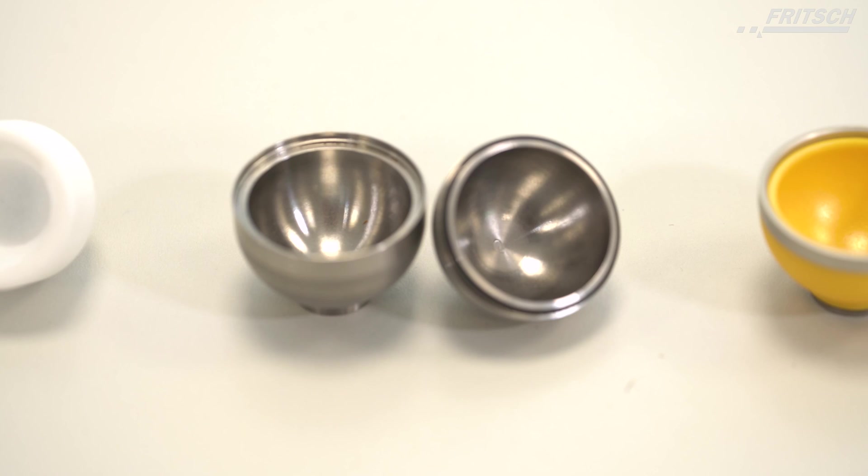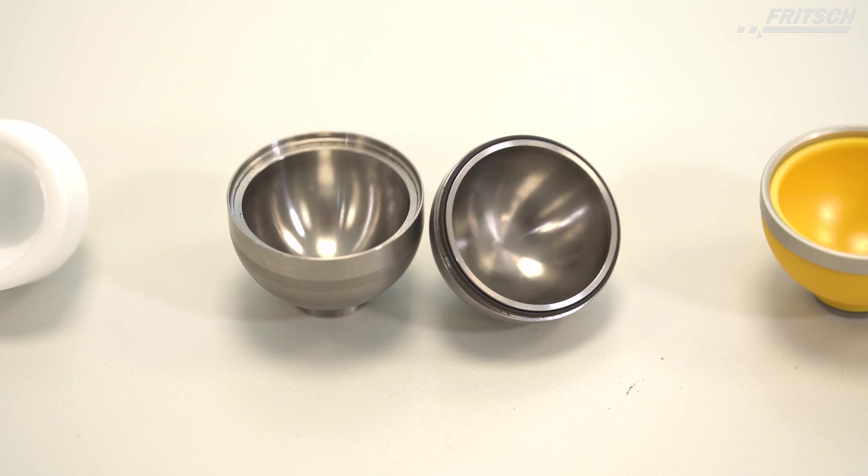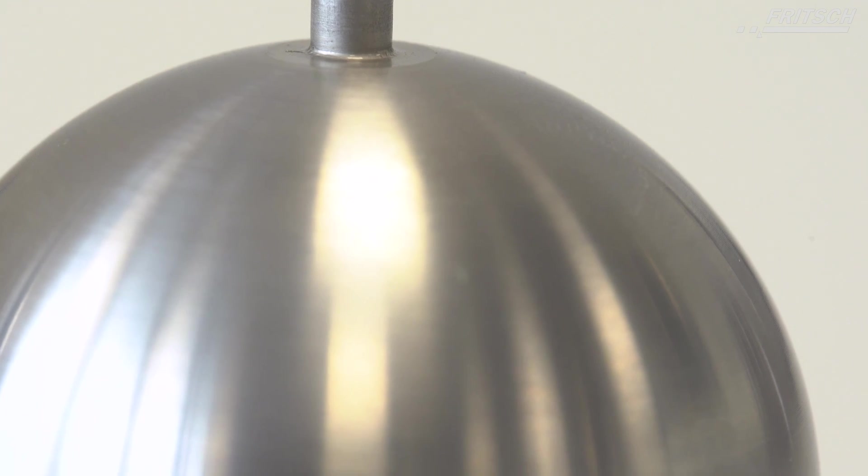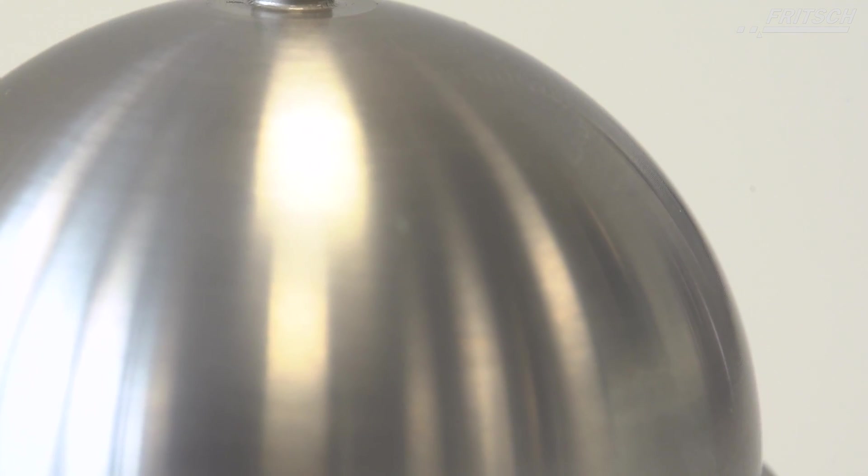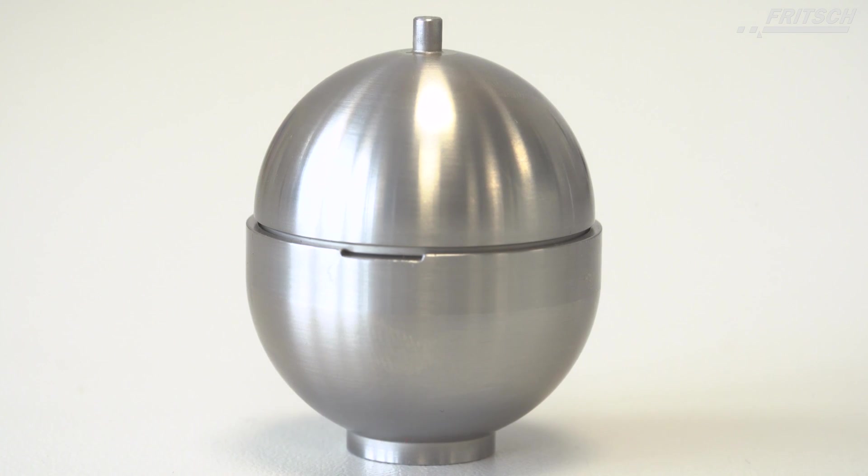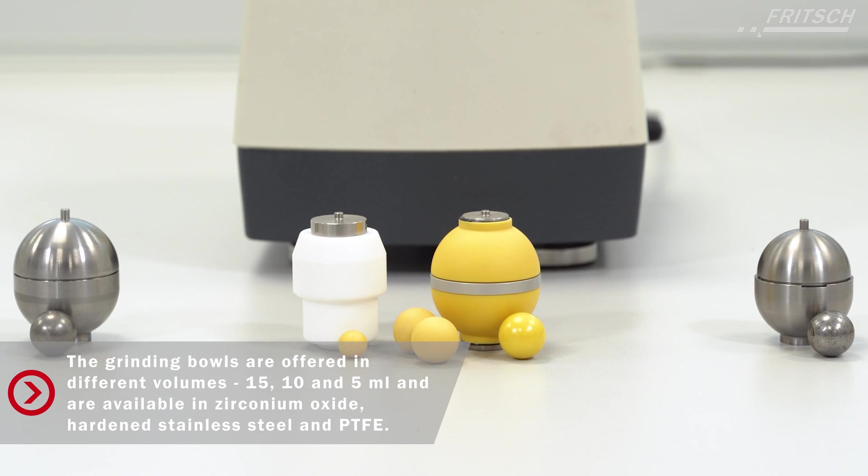Available only from Fritsch: in special consideration of the ball mill grinding concept, we developed for the Pulverisette 23 a grinding bowl with interior walls that are spherical instead of cylindrical to avoid undesired contamination of the sample through abrasion.